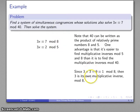So mod 8, 3 times 3 is 9, which is ≡ 1. So 3 is its own multiplicative inverse. I can multiply this by 3 to get 9x ≡ 21, which reduces to x ≡ 5 mod 8.